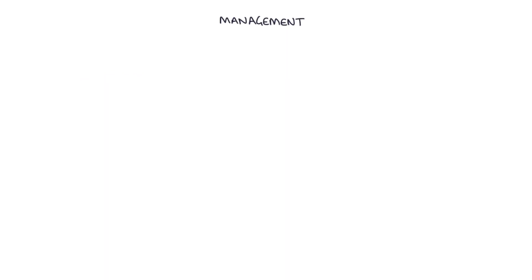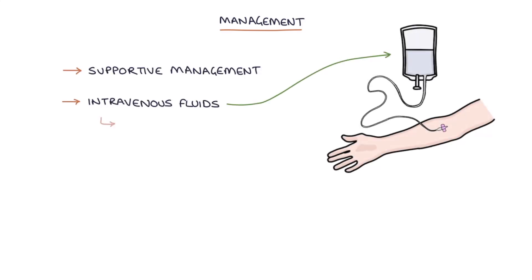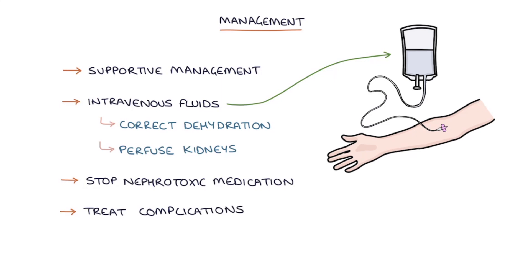So how do we manage acute tubular necrosis? Well, the treatment is the same as with other causes of acute kidney injury. It's with supportive management, intravenous fluids to correct any dehydration and to help perfuse the kidneys properly, stopping any nephrotoxic medications such as non-steroidal anti-inflammatories or gentamicin, and treating any complications of the condition.